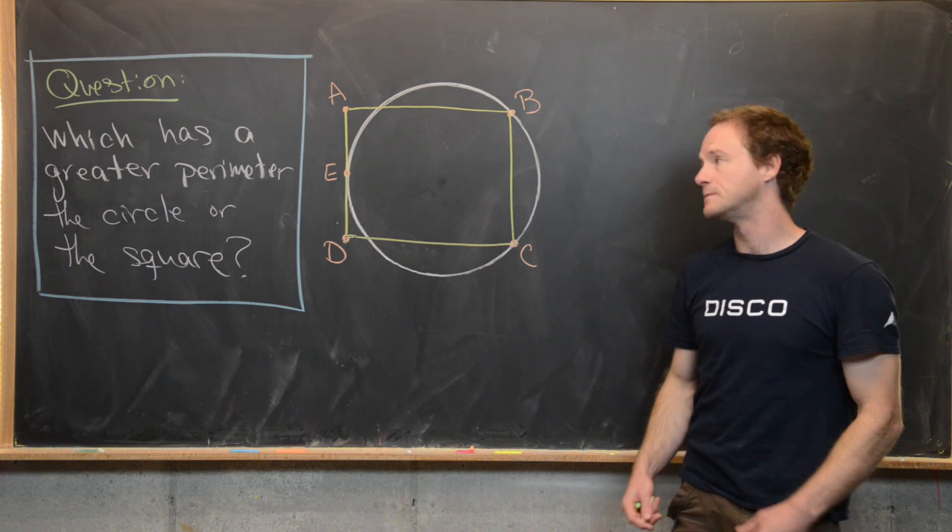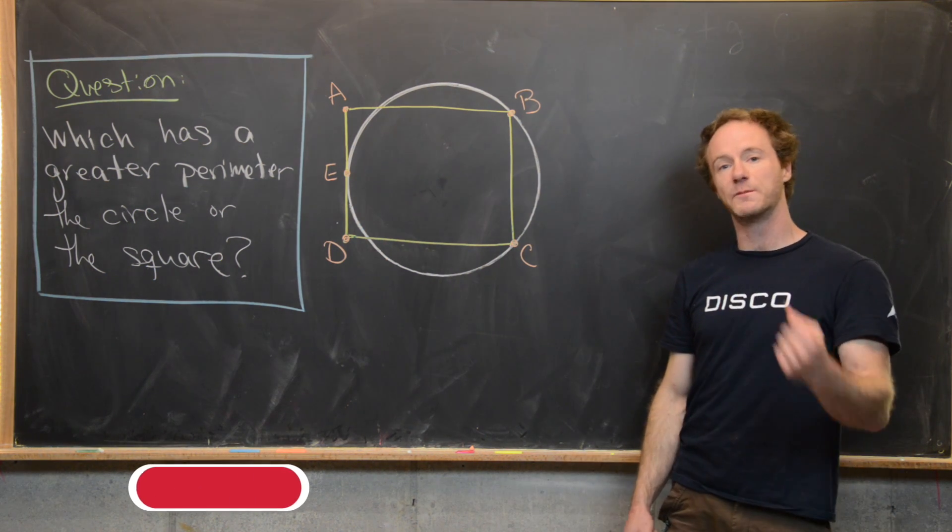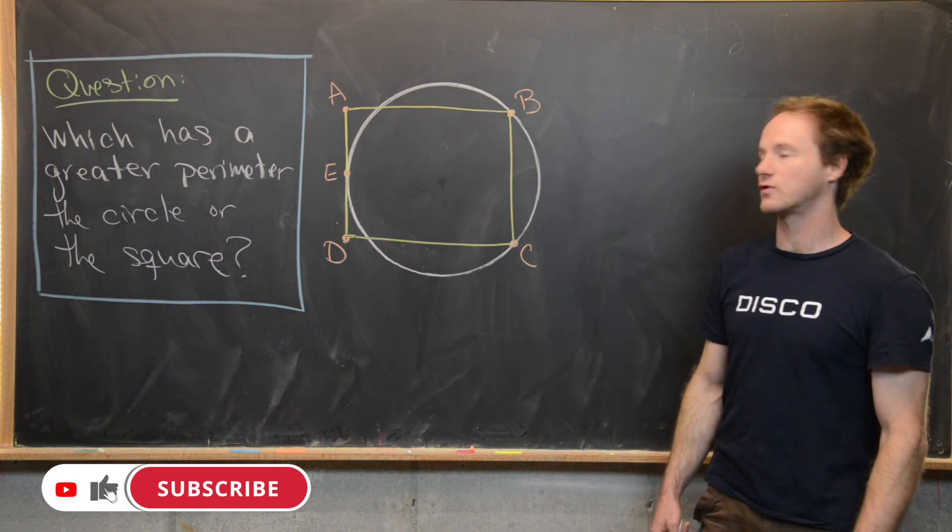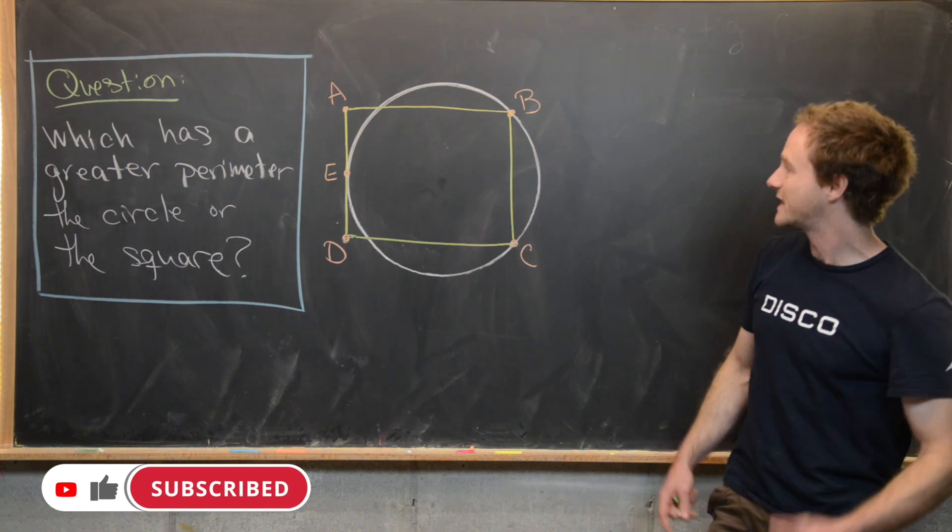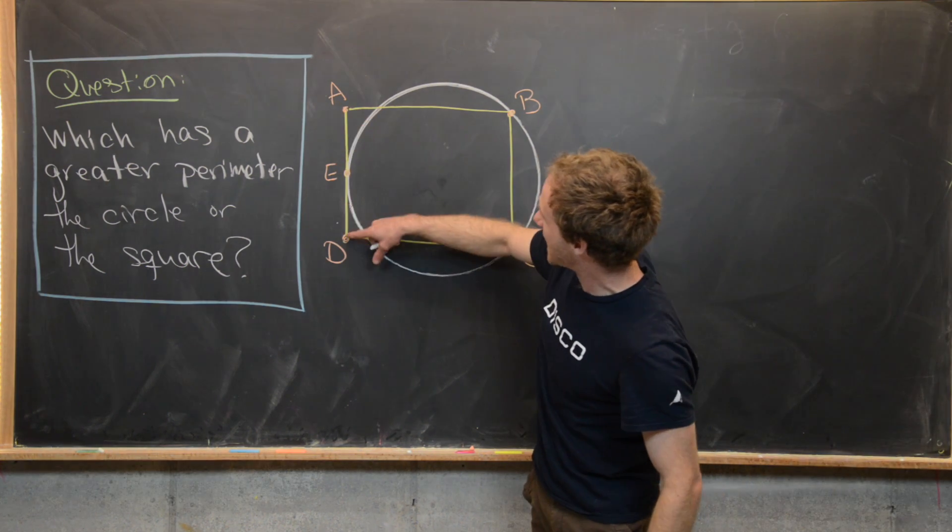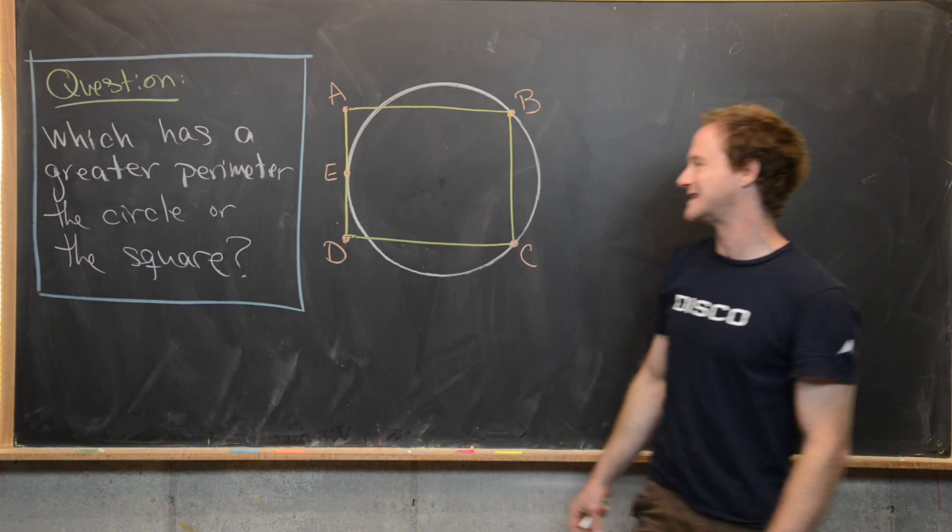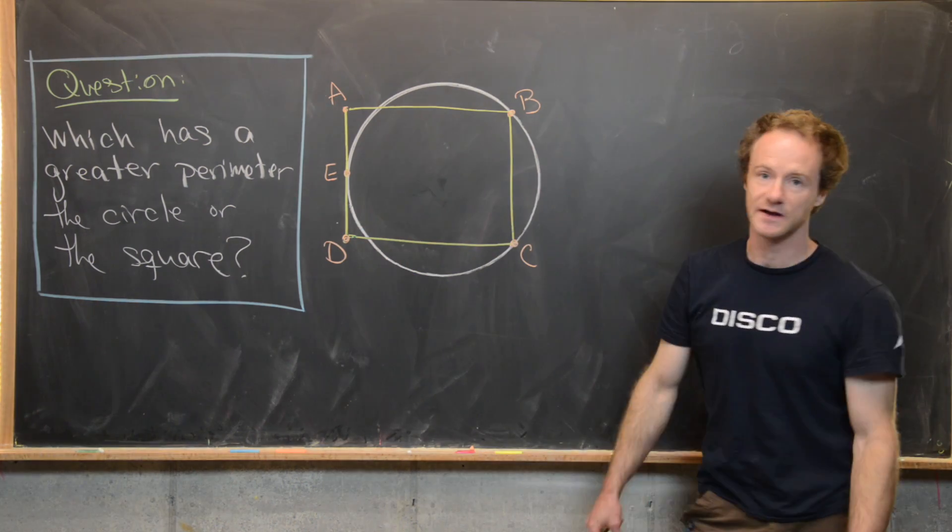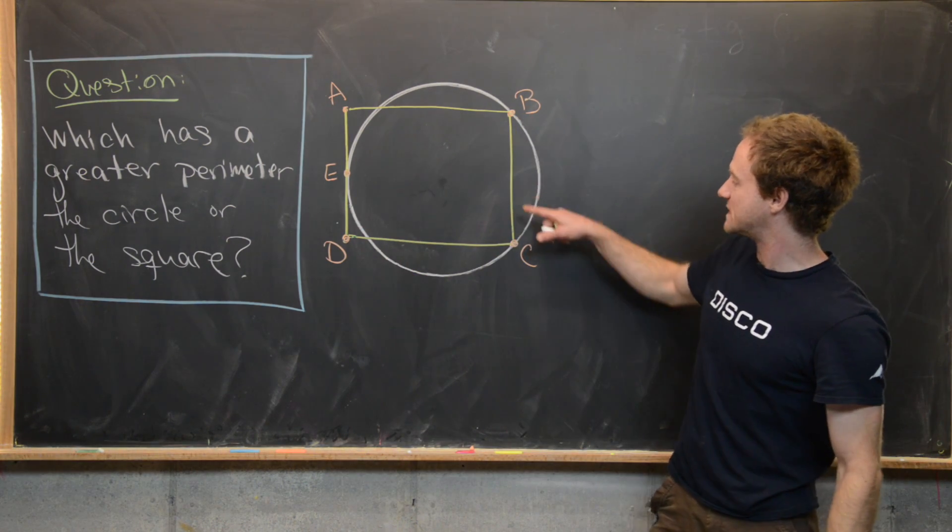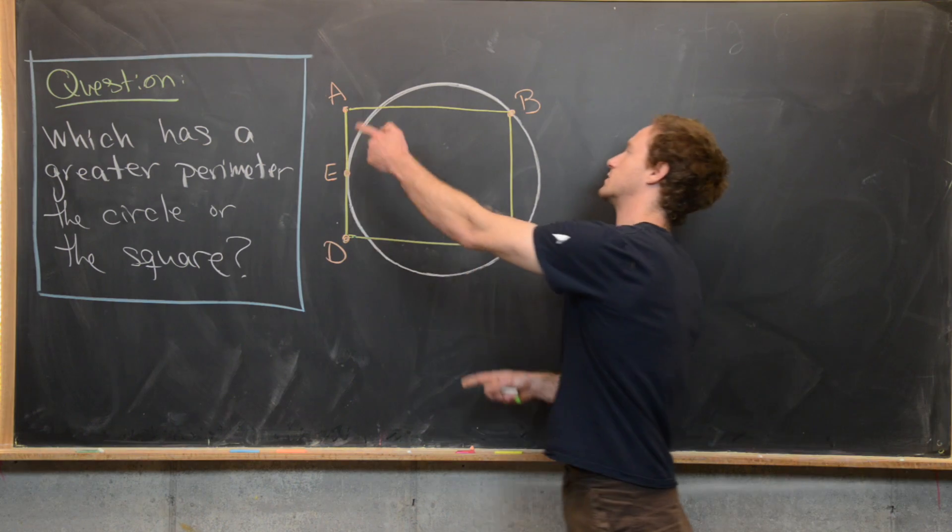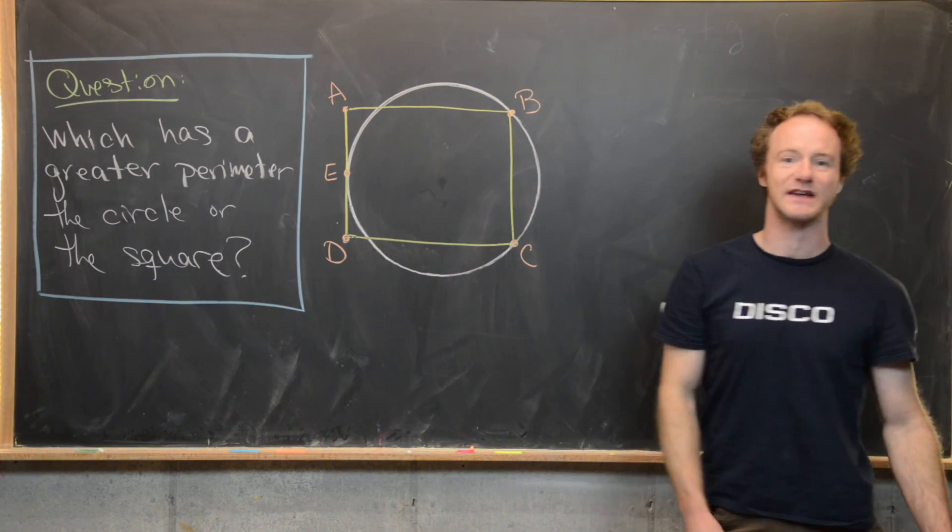Here we're going to look at a nice little geometry problem. It has to do with the perimeter of a square versus the perimeter of a circle. We start with this line segment AD and put it tangent to the circle on this left-hand side, and then we find points B and C that complete ABCD into a square.